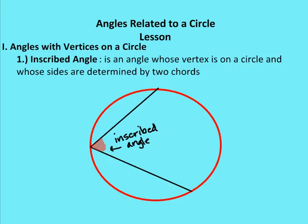We're going to talk about angles with vertices on a circle. We have two of them. One is called an inscribed angle — an inscribed angle is an angle whose vertex is on a circle and whose sides are determined by two chords: chord one and chord two. Here is my inscribed angle.